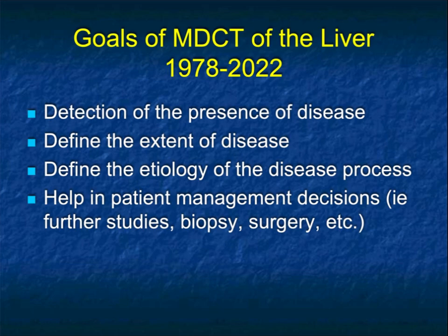If you think about the liver over the history of CT, in some ways nothing has changed. What have we always tried to do? One, detect the presence of disease. Two, define its extent. And three, define the etiology of the disease process.